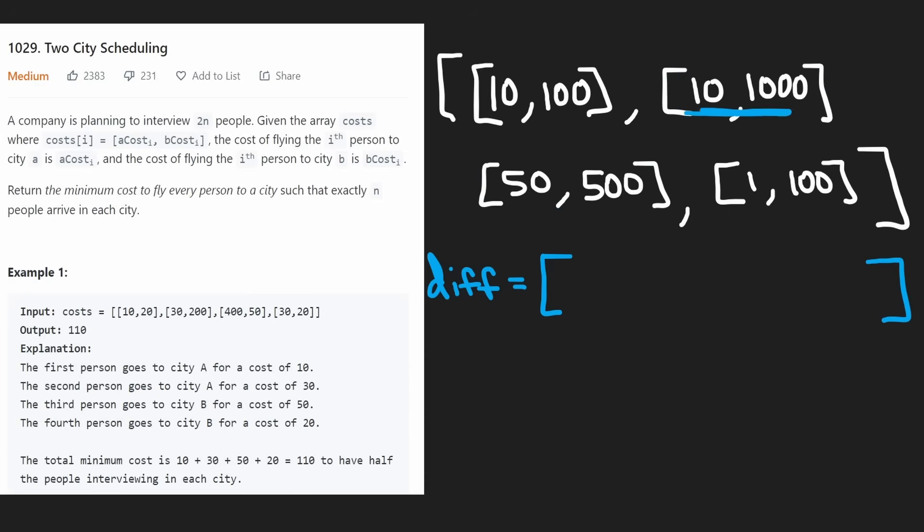The easiest way would just be to look at the cost difference. If we take the cost of sending them to city B, subtract it by the cost of sending them to city A, we basically get the cost of how much more expensive it is to send them to city B, which is also pretty much the cost that we would save if we rather sent them to city A than city B. So if we compute this for every single person in the input array, then we can effectively compare all the people.